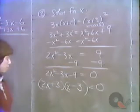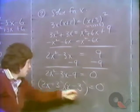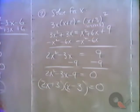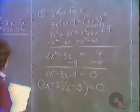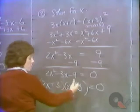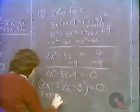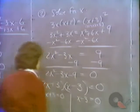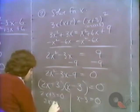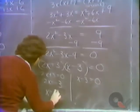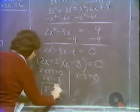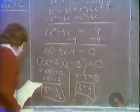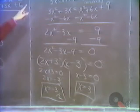We check using FOIL: 2x squared minus 6x plus 3x gives minus 3x, minus 9. So we have factored it. Using the zero product property, either 2x plus 3 equals zero giving x equals minus 3 halves, or x minus 3 equals zero giving x equals positive 3. These can be checked in the original equation.